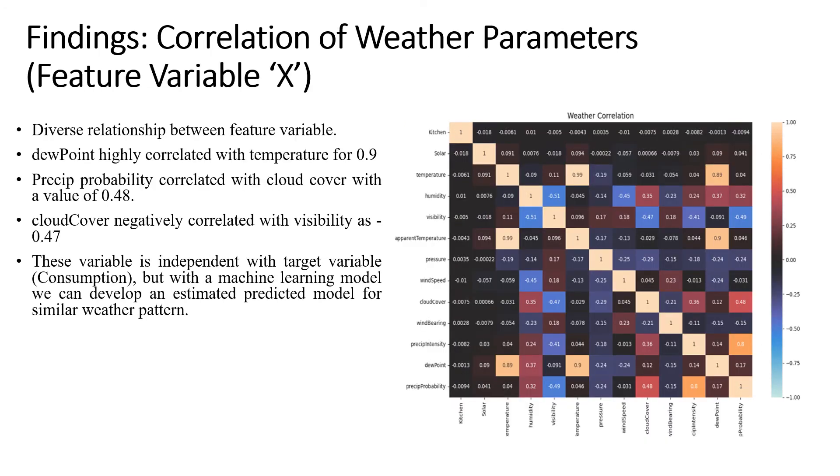Similarly, the correlation between the weather parameters are also computed and as we can see there are different ranges of colorful correlation values which illustrate the dependencies between different parameters like the cloud cover with respect to the rain probability, with respect to solar generation, with respect to temperature, humidity, etc. So there is a diverse relationship between the feature variables of the weather parameter and as you can see that dew point is highly correlated with temperature pointing at the value of 0.9, and precipitation probability is also correlated with cloud cover with a value of 0.48, and the cloud cover is negatively correlated with visibility at negative 0.47, which signifies that it is indirectly proportional to this weather parameter. So finally this variable, as we have defined, is an independent variable with the target consumption, but with the help of machine learning model we can develop an estimated predictive model for similar weather patterns.